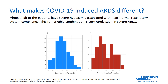Starting with the first observation noticed by Gattinoni and his colleagues: they have noticed that almost half of those patients may present with severe hypoxemia that is associated with nearly normal respiratory system compliance. If we look at this graph, we have almost half of those patients with a respiratory system compliance of 50 or more, which is something not usually seen in patients with ARDS.